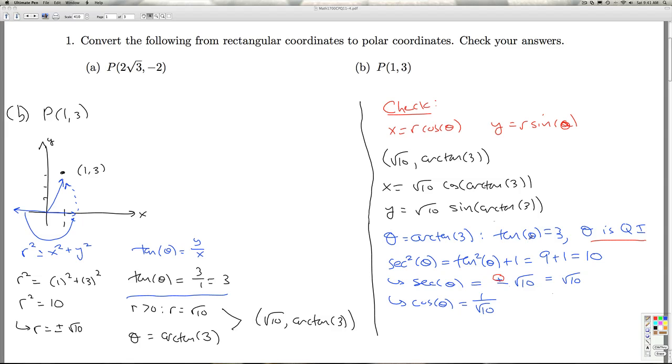And if secant theta is radical 10, that means cosine theta is 1 over radical 10.